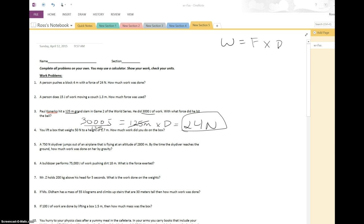For number 7, down here. Mr. Z holds 200 kilograms above his head for 5 seconds. What was the work done? So, let's set up the equation, work equals force times distance. So we're solving for work.